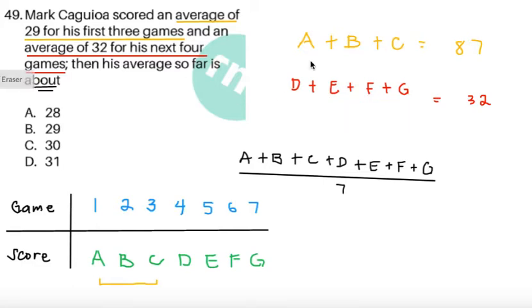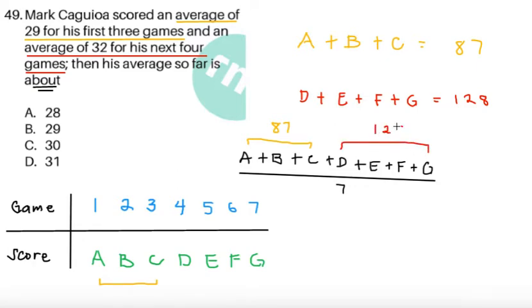And by similar logic, we're going to get that D plus E plus F plus G equals 32 times 4. And 32 times 4 is equal to 128. Now, note that the average of all his scores would be equal to simply A plus B plus C plus D plus E plus F plus G all over 7. And what's nice about this is that we can get this value because A plus B plus C is 87 from the average of the first three games, and D plus E plus F plus G equals 128 from the average of the next four games. So, we can actually get the average. It's equal to 87 plus 128, that's going to give you a total of 215 divided by 7.